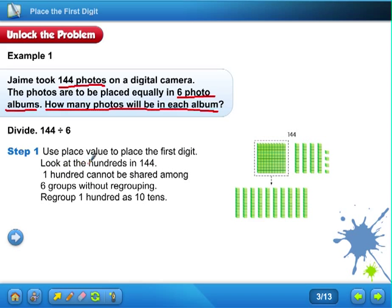Look at the hundreds in 144. One hundred cannot be shared among six groups. I can't take this hundred and put it in six groups. I only have 100. I can't put a hundred in each group because I only have one.